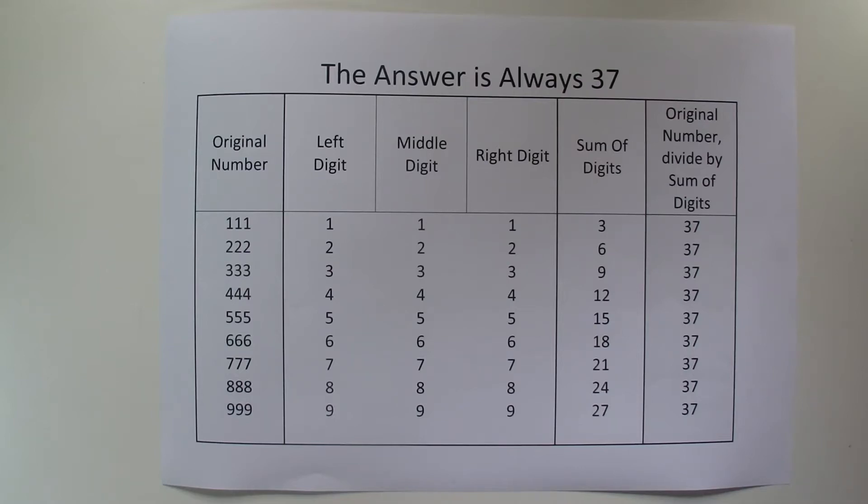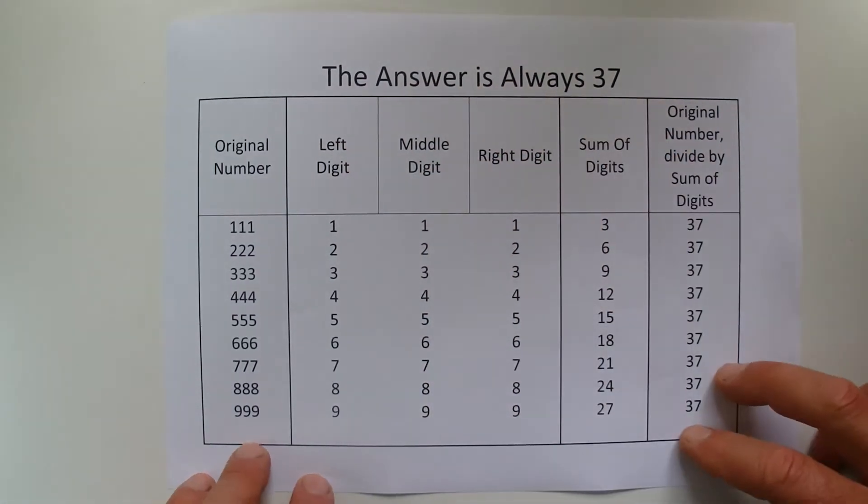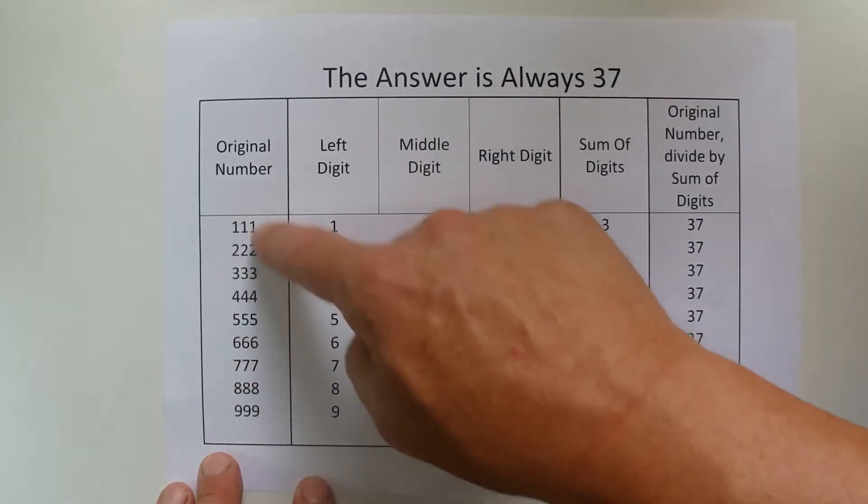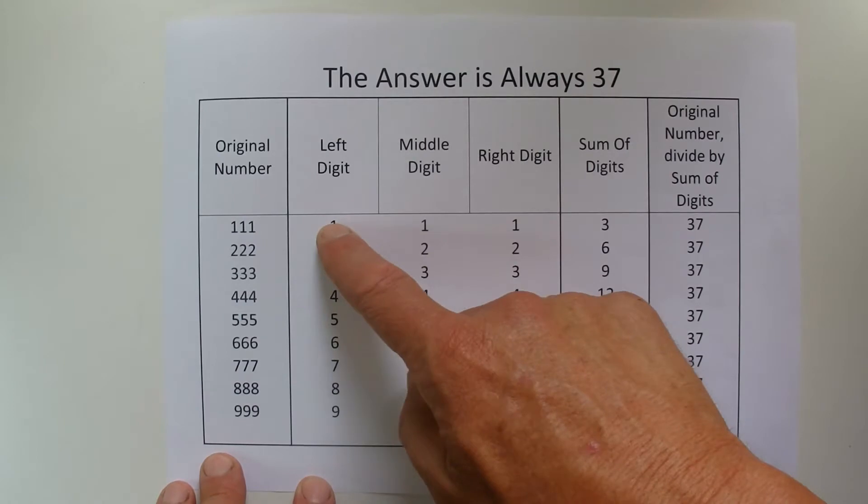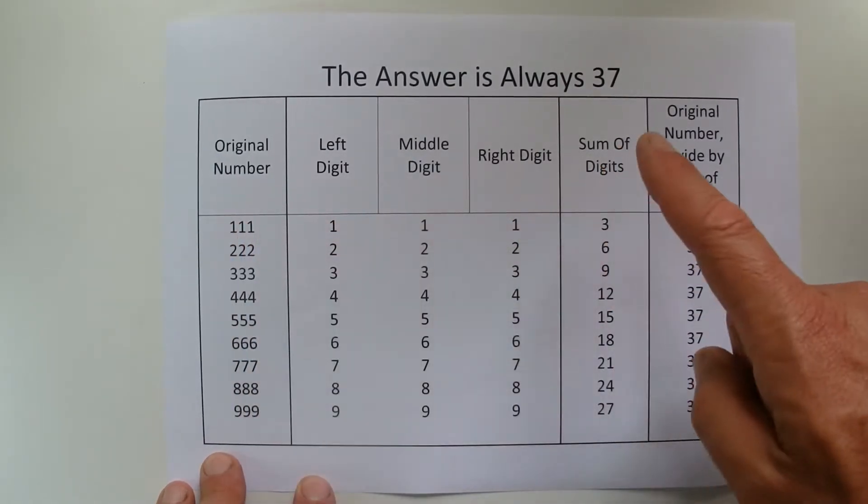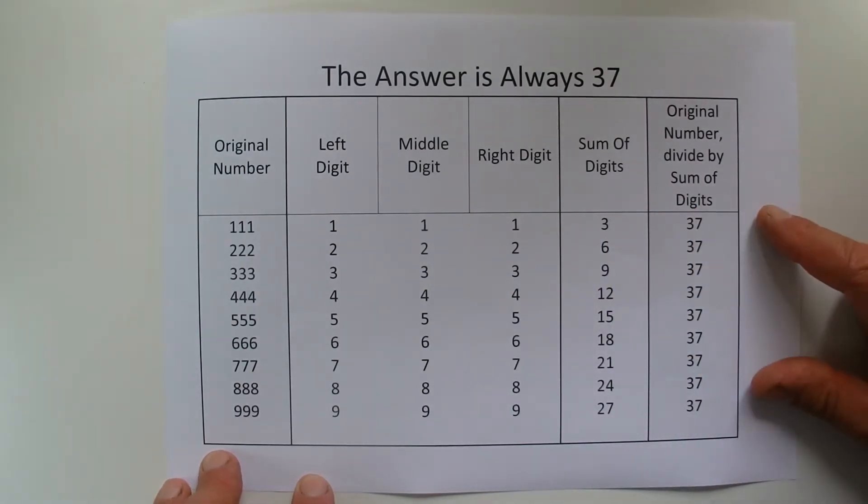Hi there. Today I'd like to share with you an interesting maths fact that I like to call The Answer Is Always 37. The interesting maths fact is that if you take a three-digit number, add up the sum of all the digits and divide the original number by the sum of the digits, then the answer is 37.